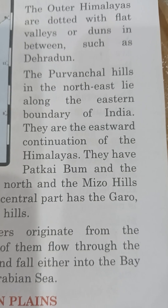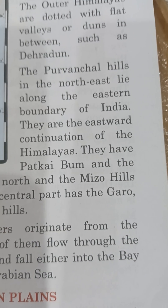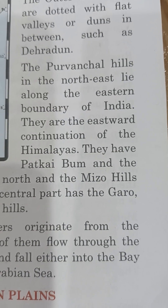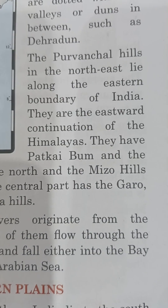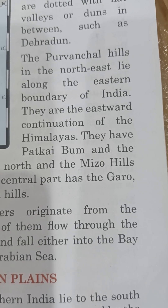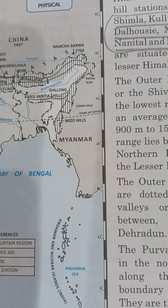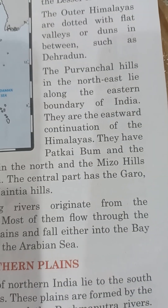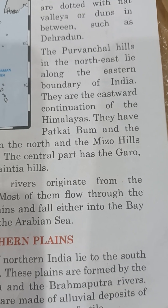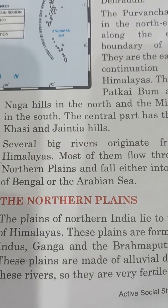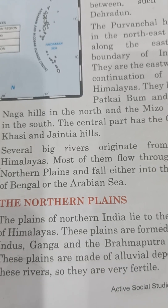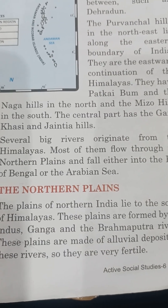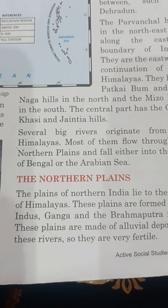The Purvanchal Hills in the northeast lie along the eastern boundary of India. They have the Patkai Bum and the Naga Hills in the north, the Mizo Hills in the south, and the central part has the Garo, Khasi, and Jaintia Hills. These three hill ranges form the eastern boundary of India.